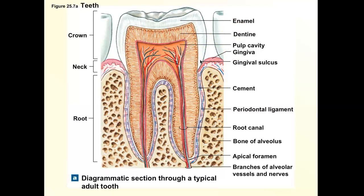The innermost part is called the pulp, which contains nerve endings. Sensitive teeth is basically due to enamel erosion or gum recession exposing the dentin, allowing substances — whether sugar or extreme temperatures — to irritate nerve endings inside the pulp. Sensitive-teeth toothpaste contains a substance that helps plug up those tiny dentin tubules, creating a physical blockage.